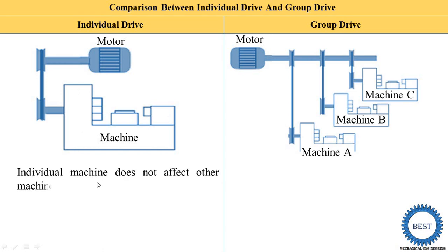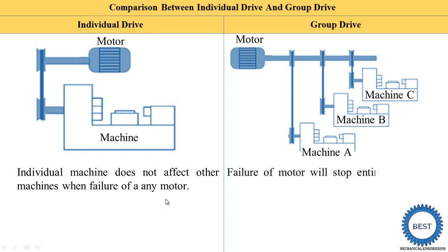Third point: individual drive does not affect other machines when any one motor fails. Since every machine has a separate motor, if one motor is damaged or not working, the other machines are not affected. But in a group drive, only one electric motor is used, and if that motor fails, the entire group of machines stops working.